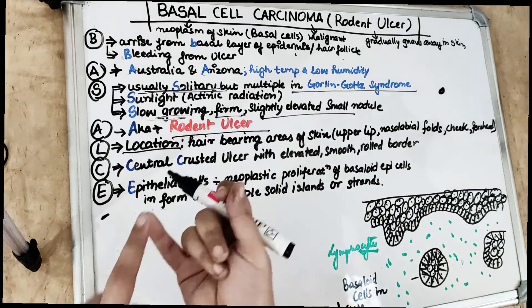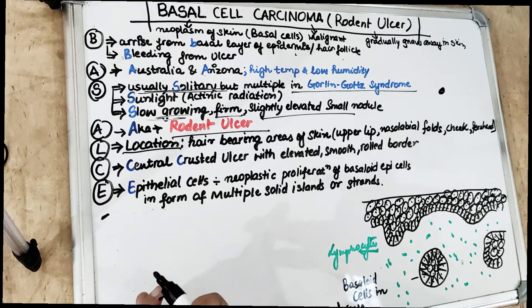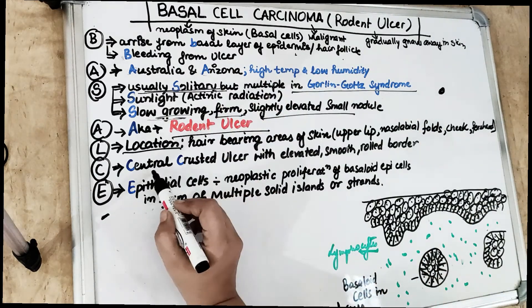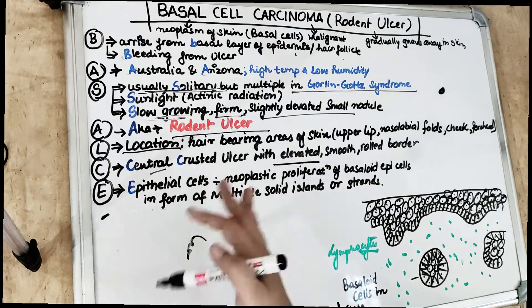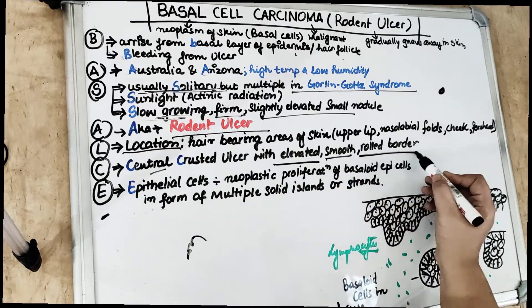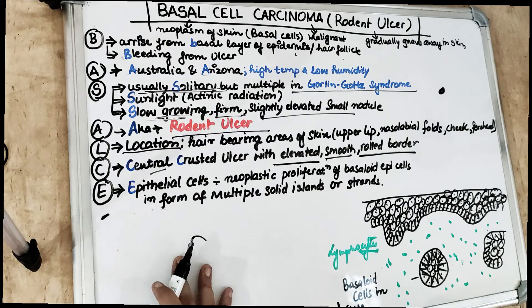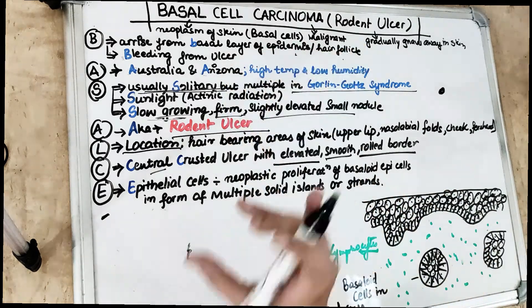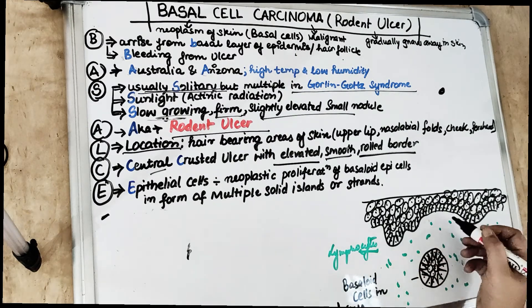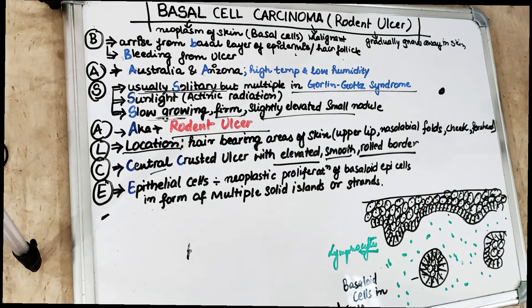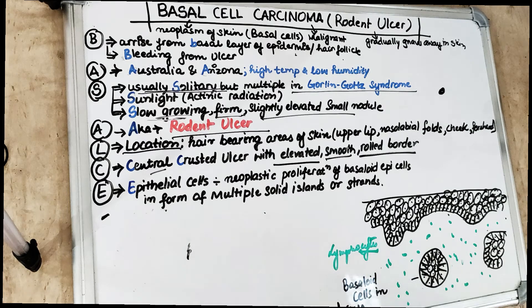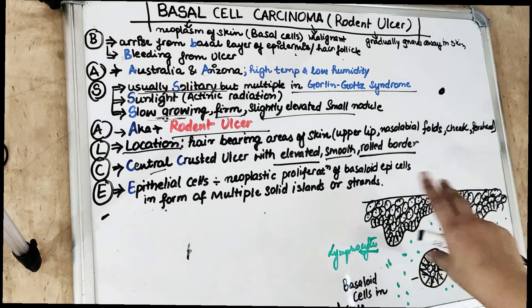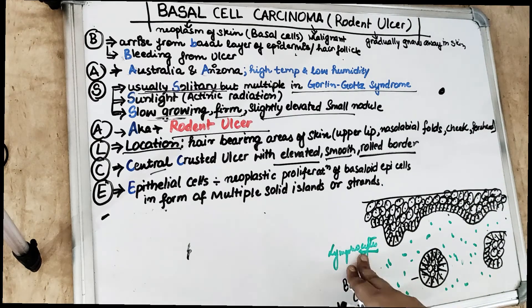C in the mnemonic stands for central crusted ulcer. It is a slow growing, firm ulcer, slightly elevated from the surface, with a central crusted area. The borders are rolled-out margins. Histologically, there is neoplastic proliferation of the basal layer of the epidermis — basal layer epithelial cells invading into the connective tissue in the form of multiple solid islands or epithelial strands. Basaloid cells are present as islands in the dermis, and lymphocytic infiltration is also seen.